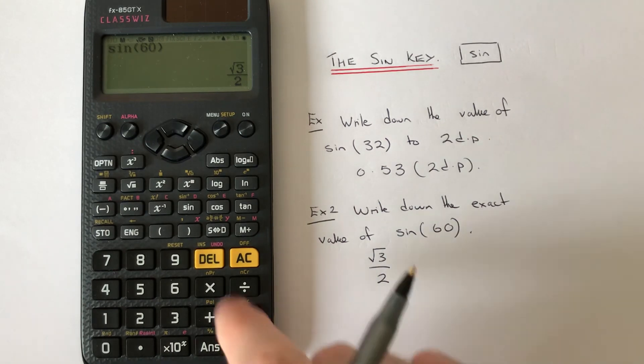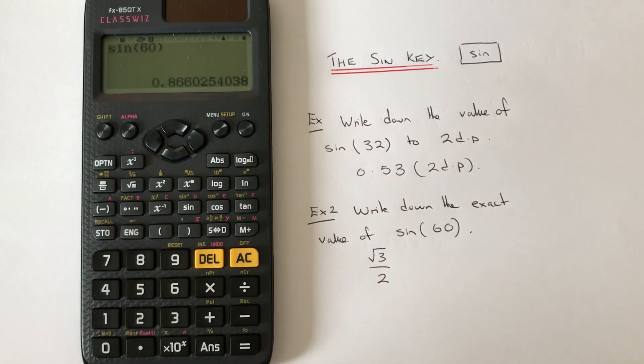If you did want it as a decimal, then you just press the S-D key and you have the decimal answer as well. So thanks for watching guys, see you next time.